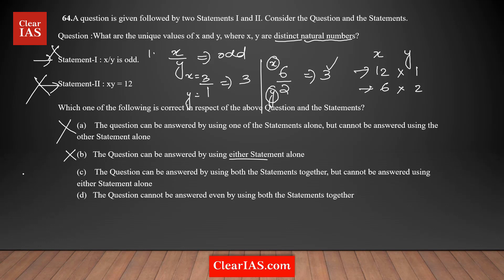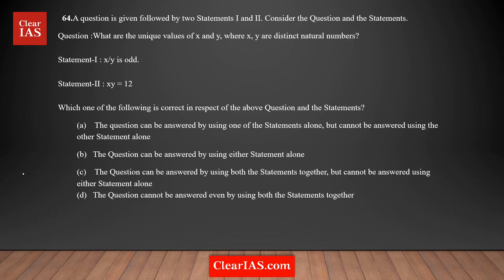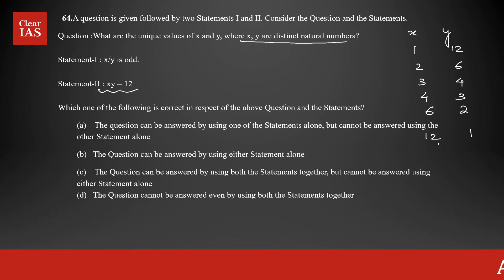Since individually the statements are not sufficient, the next step is to combine both. I'm going to list down all possible combinations based on statement two: 1 and 12, 2 and 6, 3 and 4, and their reverses — 4 and 3, 6 and 2, 12 and 1. You should consider all possibilities including vice versa, since only the product of the two numbers is specified as 12 and x and y are distinct natural numbers.